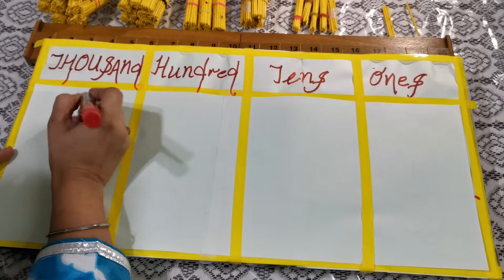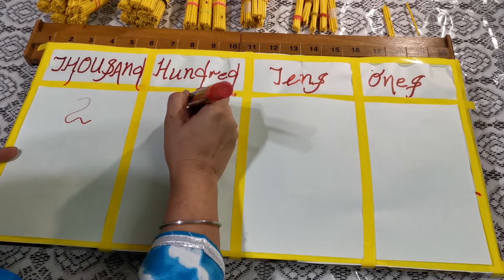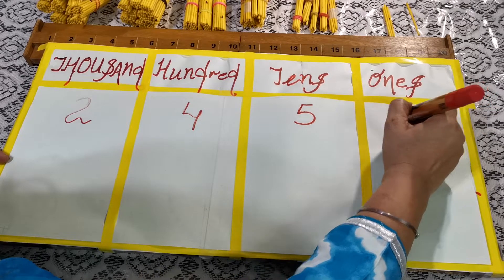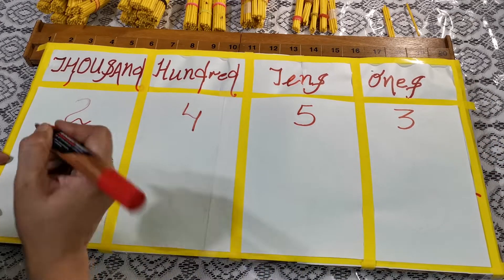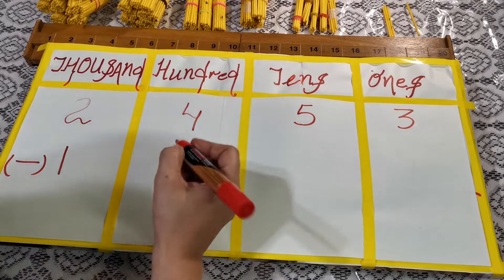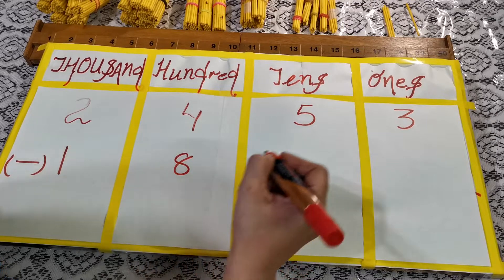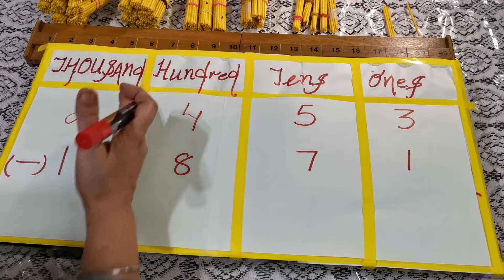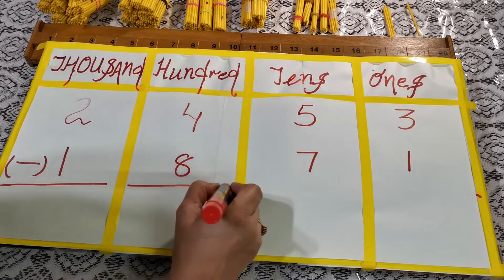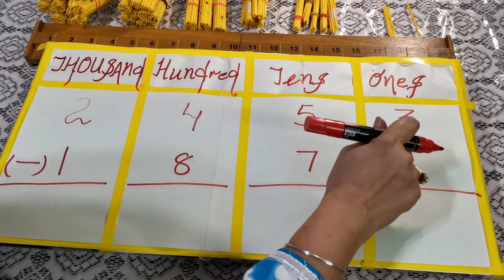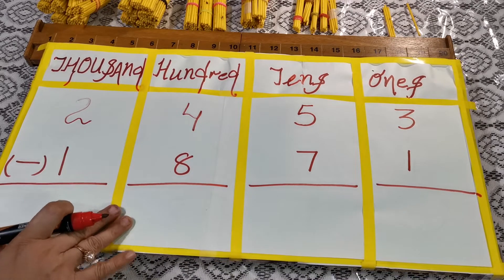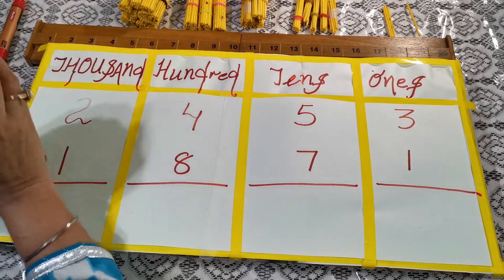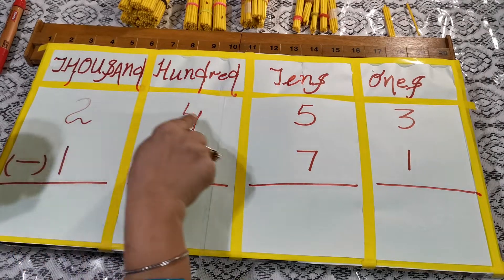I have the number 2453 — two thousands, four hundreds, five tens, and three ones. The next number I have is 1871 — I will put the minus symbol, then 800, seven tens, and one one. Now I will draw a line to separate the numbers from the difference, because these are the main numbers and the leftover is called the difference.